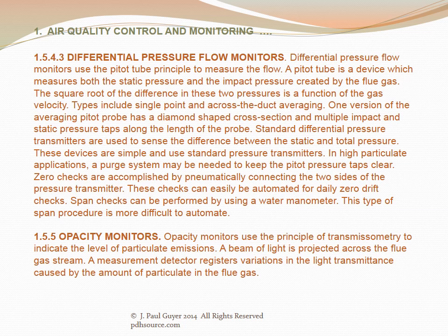Differential pressure flow monitors use the pitot tube principle to measure flow. A pitot tube measures both static pressure and impact pressure created by the flue gas; the square root of the difference in these two pressures is a function of gas velocity. Types include single point and across-the-duct averaging. One version of the averaging pitot probe has a diamond-shaped cross section with multiple impact and static pressure taps along the probe length. In high particulate applications, a purge system may be needed to keep the pitot pressure taps clear. Zero checks are accomplished by pneumatically connecting the two sides of the pressure transmitter and can easily be automated for daily zero drift checks. Span checks can be performed using a water manometer, though this is more difficult to automate.